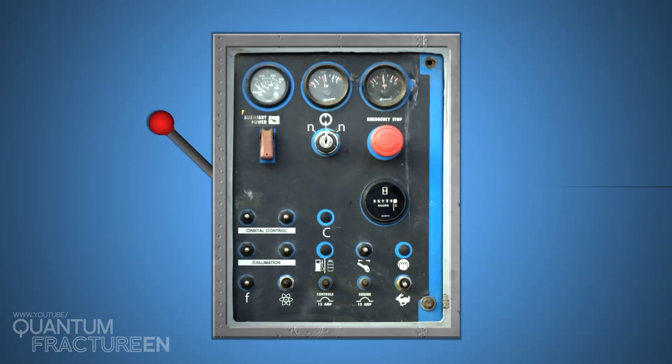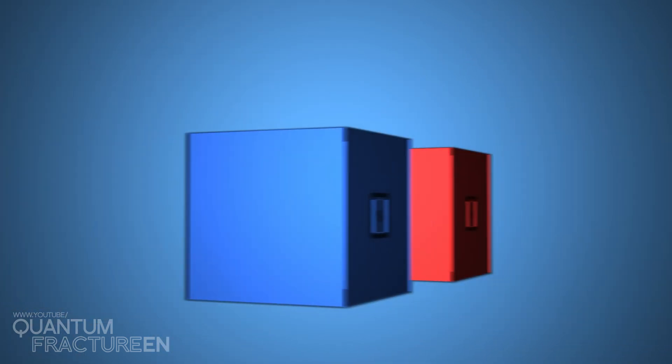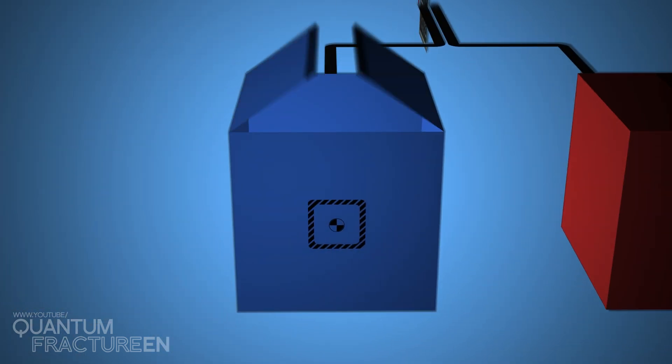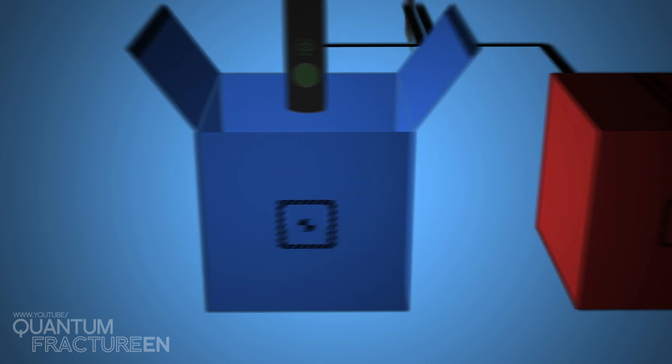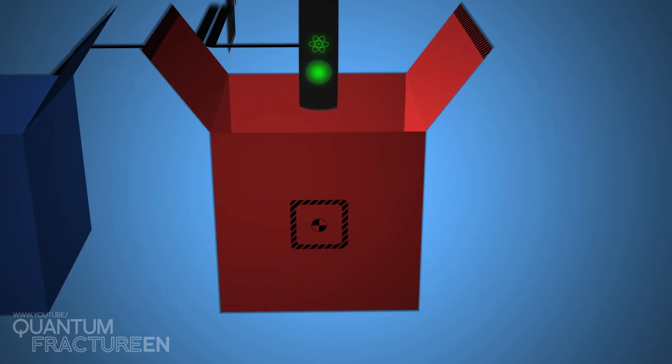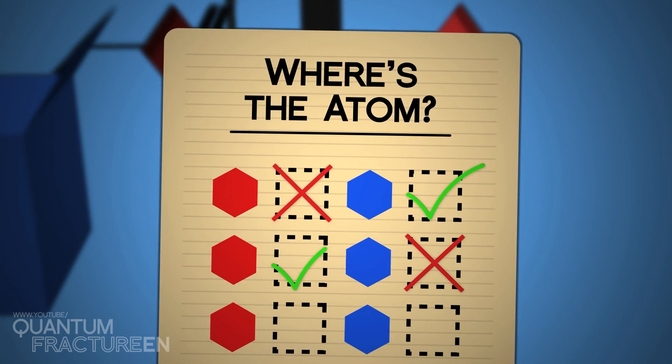Let's repeat the process. We switch on the machine, and have a new randomly placed atom. We try our luck with the blue box, and, well, nothing from the detector. It appears to be empty. Let's open the red one then. Aha, green light! The atom was here. Blue box empty, atom in the red one.